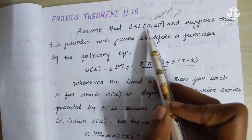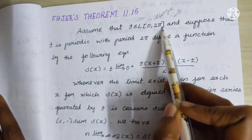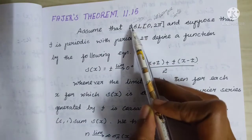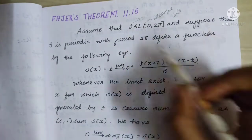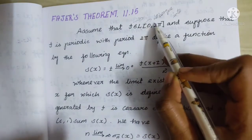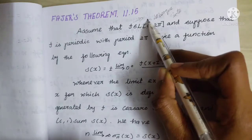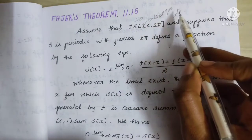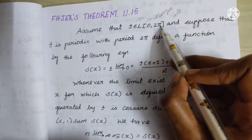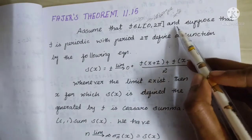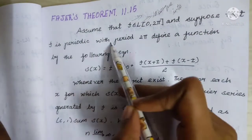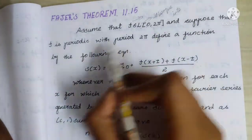Assume that f belongs to L of the closed interval [0, 2π]. f is a function that belongs to the Lebesgue integral. L denotes the Lebesgue integrable functions on the interval [0, 2π]. Suppose that f is periodic with period 2π.